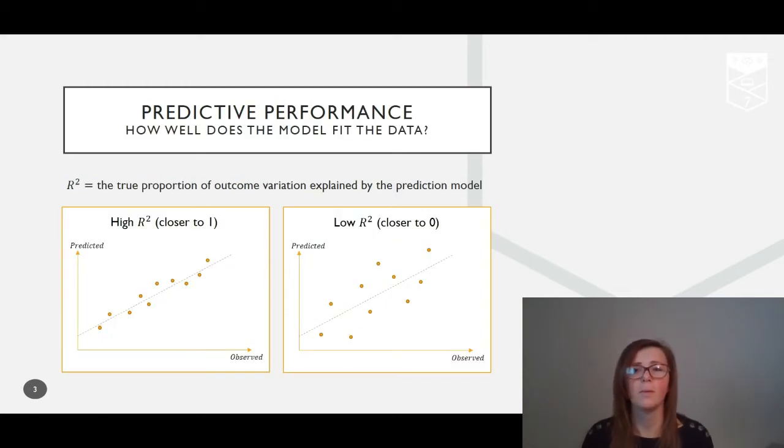After a model has been developed, its performance can be measured in a number of different ways. The first we focus on and require precision in upon external validation is the R-squared, which gives a measure of how well the model fits the data. R-squared is essentially a measure of the correlation between the true observed outcomes and the predictions.